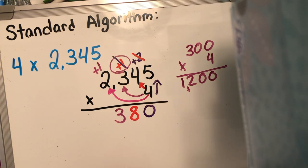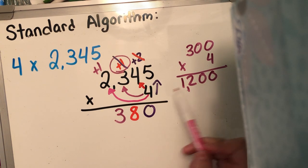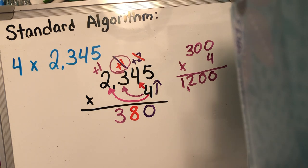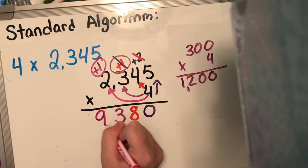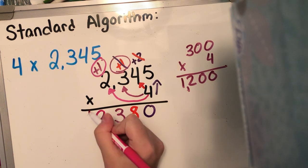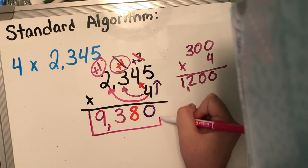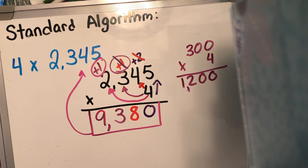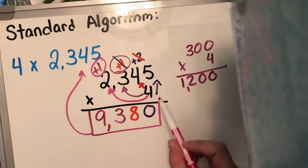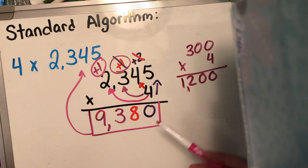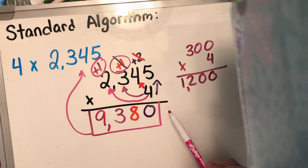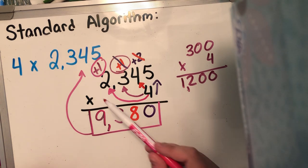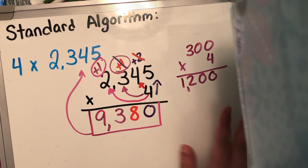And I'm finally gonna move to the thousands place. Four times 2,000 — I know that four times 2,000 is 8,000 plus my additional one is gonna give me 9,000. So altogether, the product of four times 2,345 is 9,380. I'm using different colors so that way you guys can see the steps that go into the standard algorithm. You go up the ones, you go across to the tens, go across to the hundreds, go across to the thousands. You keep going across until you cannot go any further.